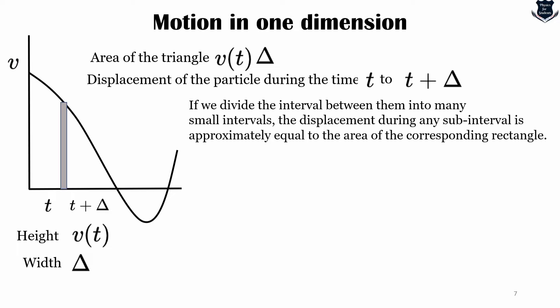If t1 and t2 are two times, if we divide the interval between them into many small intervals, the displacement during any sub-interval is approximately equal to the area of the corresponding rectangle.